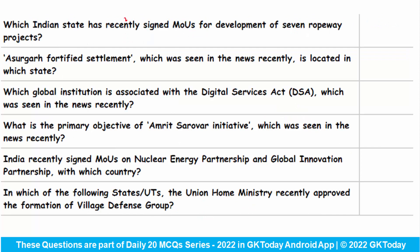Which Indian state has recently signed memorandums of understanding for the development of seven ropeway projects? This is Himachal Pradesh. These seven ropeway projects would be installed in Kangra, Kullu, Chamba, Sirmour, and Bilaspur districts.